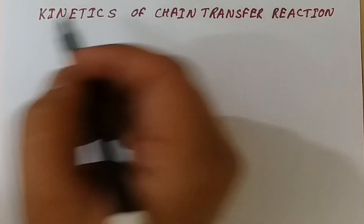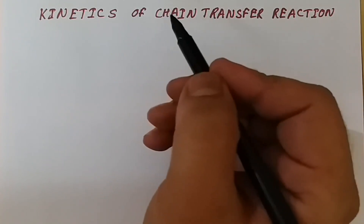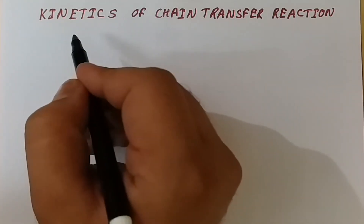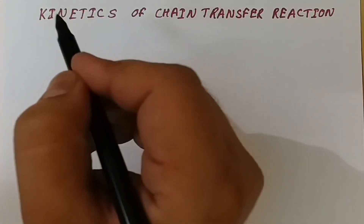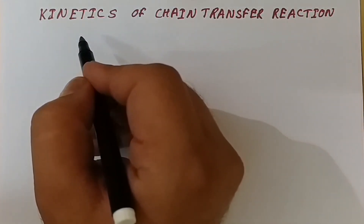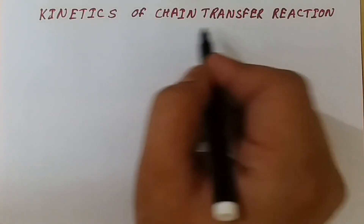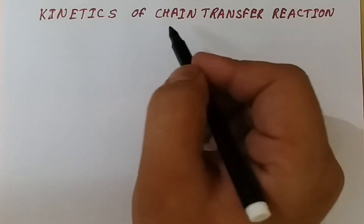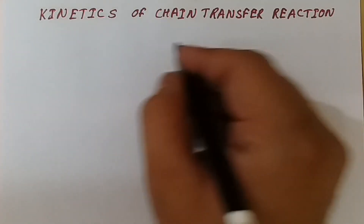Welcome. Today we are going to discuss kinetics of a chain transfer reaction. In the last lecture, we discussed kinetics of free radical polymerization where we considered that the loss of the active center or chain was terminated by coupling only. There are several other mechanisms by which chain transfer can take place, and hence we need to consider all of them.